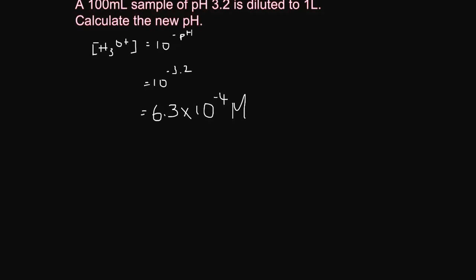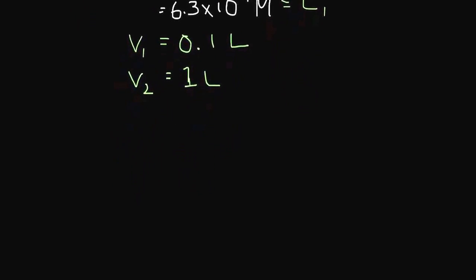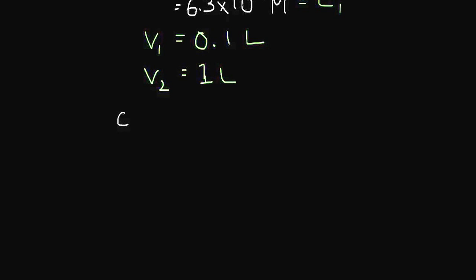So, that is in 100 mLs. And this is our C1. V1 is our 100 mLs, which is 0.1 liters. And our V2 is 1 liter. So, let's substitute that in. We have C1V1 equals C2V2. C1 is 6.3 by 10 to the negative 4 times 0.1 equals C2 times 1.